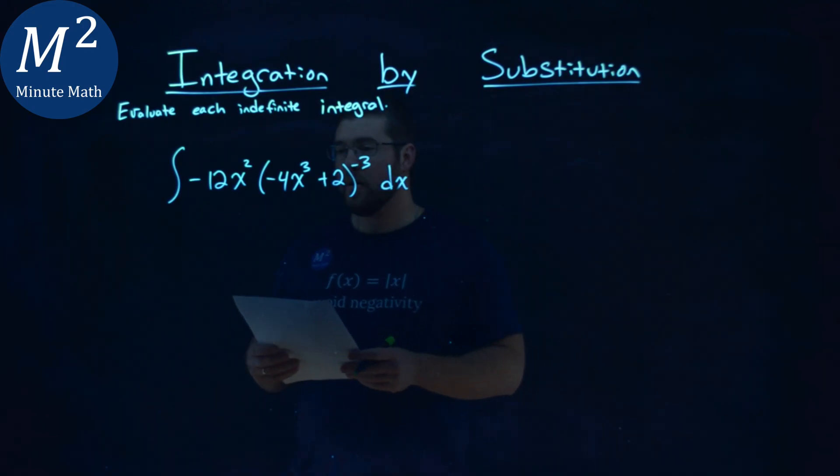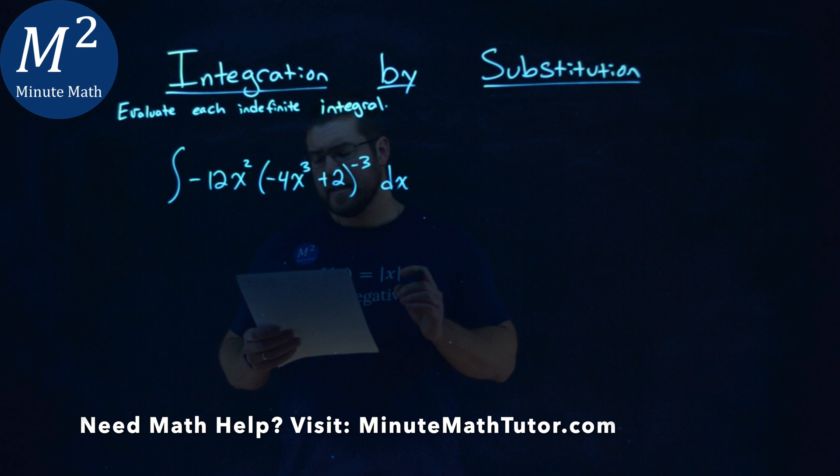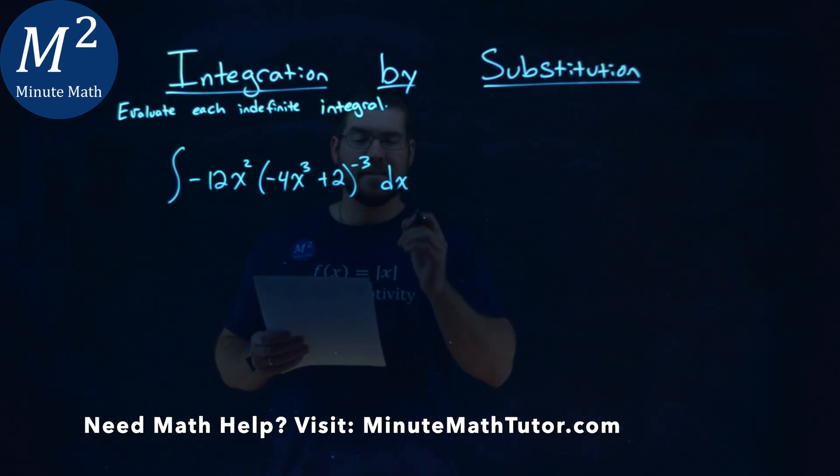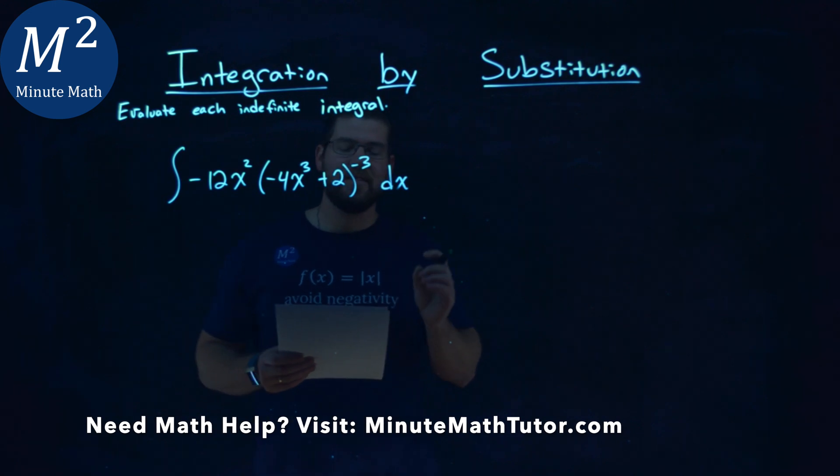We're given this problem: the integral of negative 12x² times (negative 4x³ plus 2) to the negative third power dx. We've got to evaluate this indefinite integral.